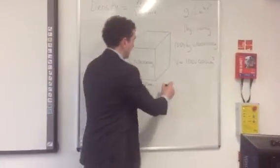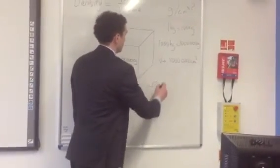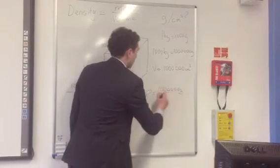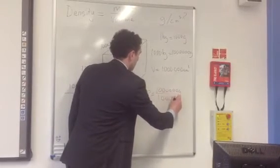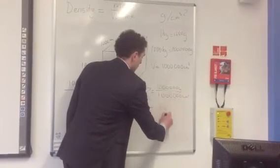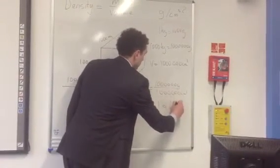Therefore, now I can see the density is equal to a million grams divided by a million centimeters cubed, which is equal to 1 gram per centimeter cubed.